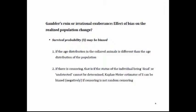Here is the crux — I call it Gambler's Ruin, or Irrational Exuberance. Lambda-hat is an estimate, so it could be biased. Similarly, survival probability could be biased if the age distribution in collared animals differs from the population. If you have censoring — when you lose an animal and don't know its fate — you must use the Kaplan-Meier estimator, which is known to be negatively biased.